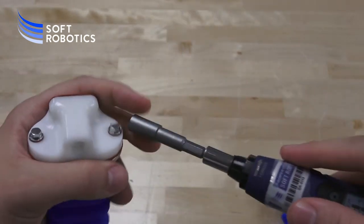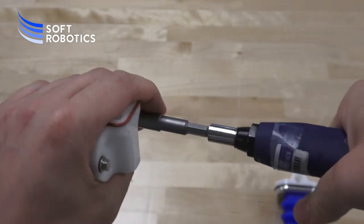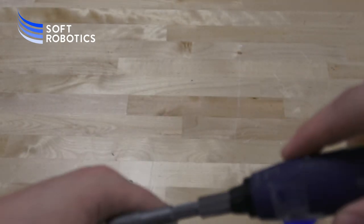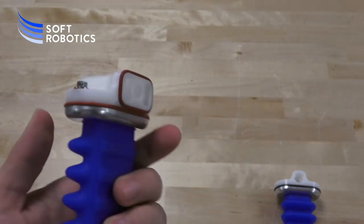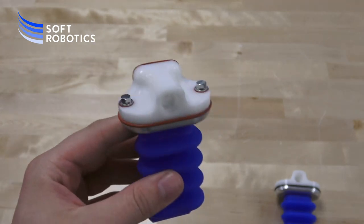Now I'll take my torque wrench and again, I can torque this down to the appropriate value. And there we have it. That's how you replace a finger on a finger module.